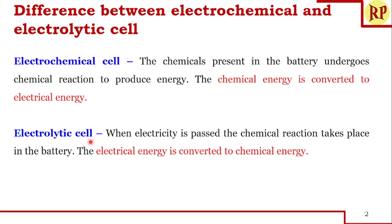In an electrolytic cell, when electricity is passed, the chemical reaction takes place inside the battery. That is, electrical energy is converted to chemical energy. This happens during the charging cycle of the battery.